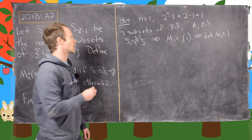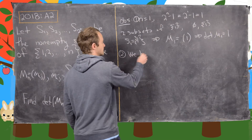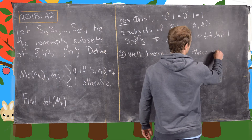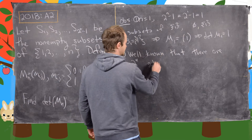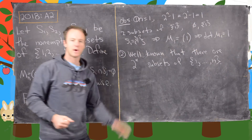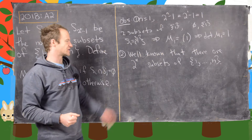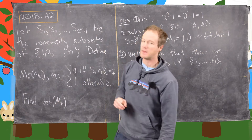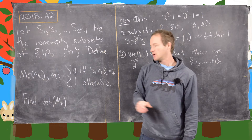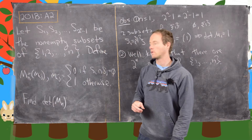Our second observation: it's well known that there are 2^N subsets of {1, 2, ..., N}. Since one of them is the empty set, there are 2^N minus 1 non-empty subsets, and this is meant to be a list of all of them. Also, the problem says nothing about the ordering of these subsets, which means the determinant must be invariant under that ordering.